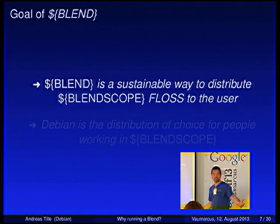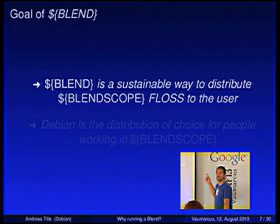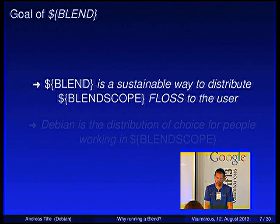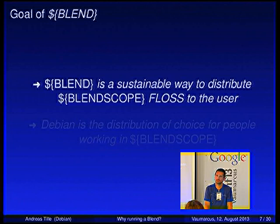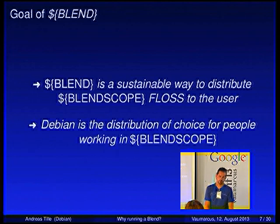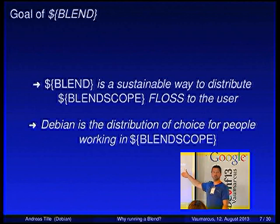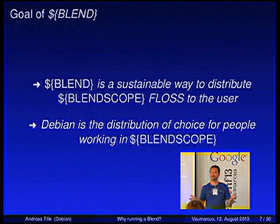The goal of a blend is easy — just substitute 'Debian Med' by 'blend' and that's the point. Debian Edu invented the meta package approach, and what I've done is substituting 'Debian Edu' by 'blends' — and it works for everybody. Debian should be the distribution of choice for people working in any blend's scope. You are free to insert whatever you want to do — be it games, multimedia, GIS, science, whatever. The framework is there and you can use it.